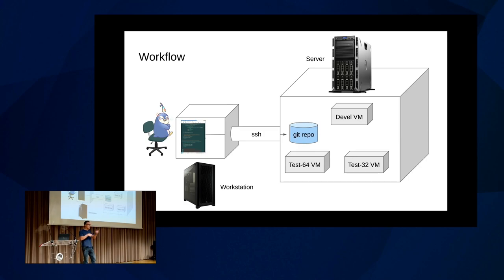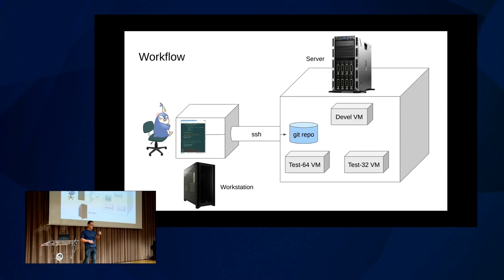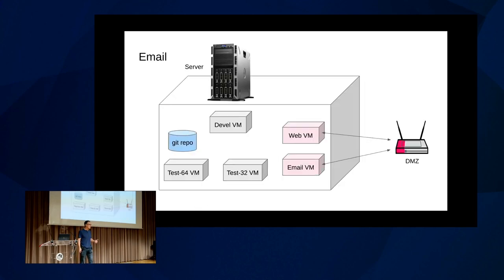This is how my workflow is: I sit down, log into my personal machine, and my server is connected through a KVM switch. I don't usually connect to the server directly — I connect to my workstation, then SSH to the server and do all my work there. I have a bunch of VMs: dev VM, test VMs, 32-bit and 64-bit. Any interaction with kernel.org goes through my workstation, because my server doesn't have direct internet access. I use NitroKey — like a YubiKey — to do anything upstream. I always consider myself potentially compromised anyway.